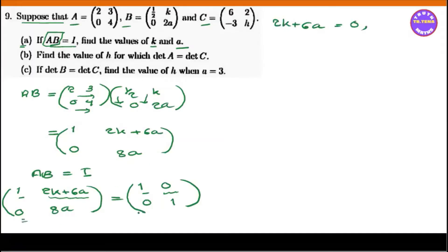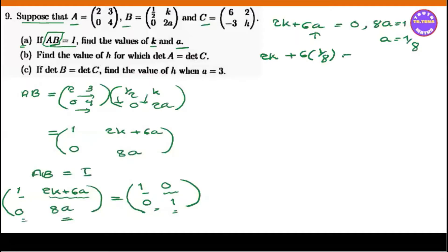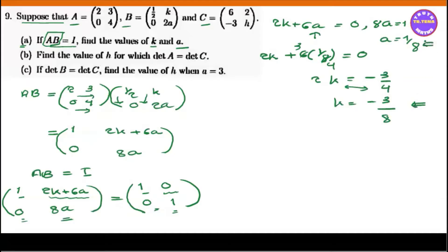With 8A equal to 1, therefore A is equal to 1 by 8. Then 2K plus 6 into 1 by 8 is equal to 0. This gives 2K equal to minus 3 by 4, so K equals minus 3 by 8. Therefore A is equal to 1 by 8 and K is equal to minus 3 by 8.